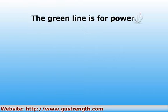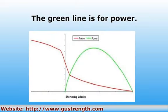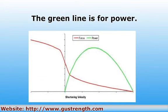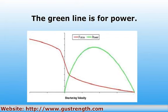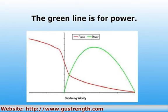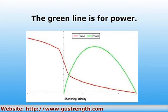You are probably wondering what the green line is for. The green line represents power. Most athletic pursuits require high power outputs rather than high total force outputs. This is the area of the curve an Olympic lifter is concerned with, for instance. The point where the green and red lines intersect is the area of highest power — this is when there is almost equal contribution from acceleration and force.